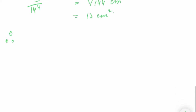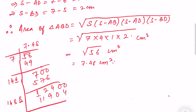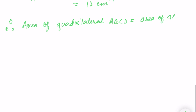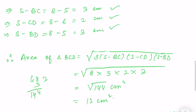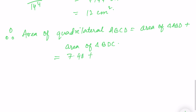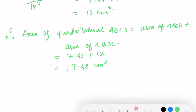Therefore, area of quadrilateral ABCD equals area of triangle ABD plus area of triangle BCD, which is 7.48 plus 12, equals approximately 19.48 centimeter square. This is the answer. We write approximately since 7.48 is an approximation taken from the square root calculation.